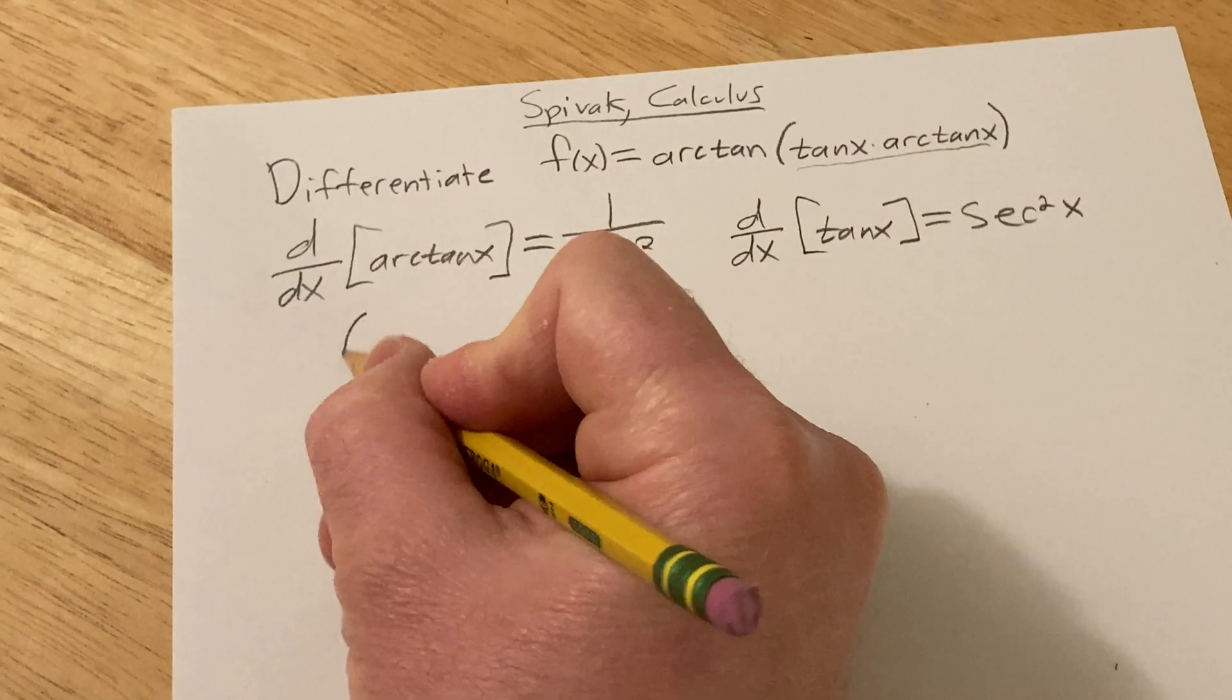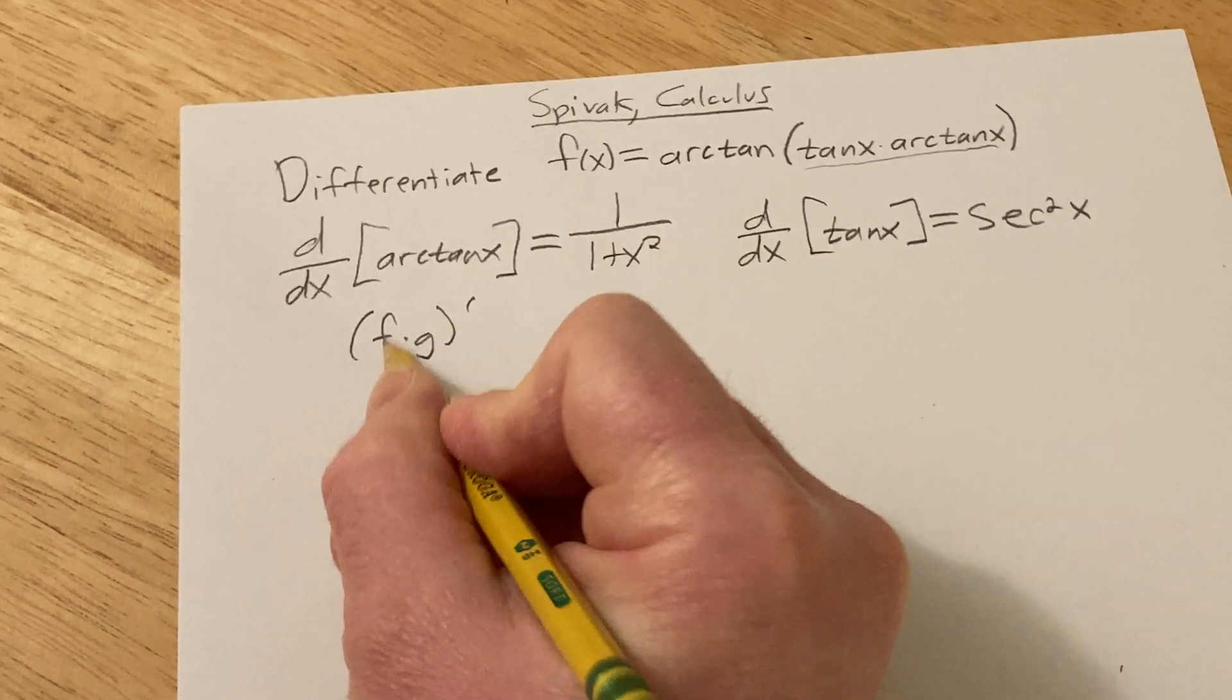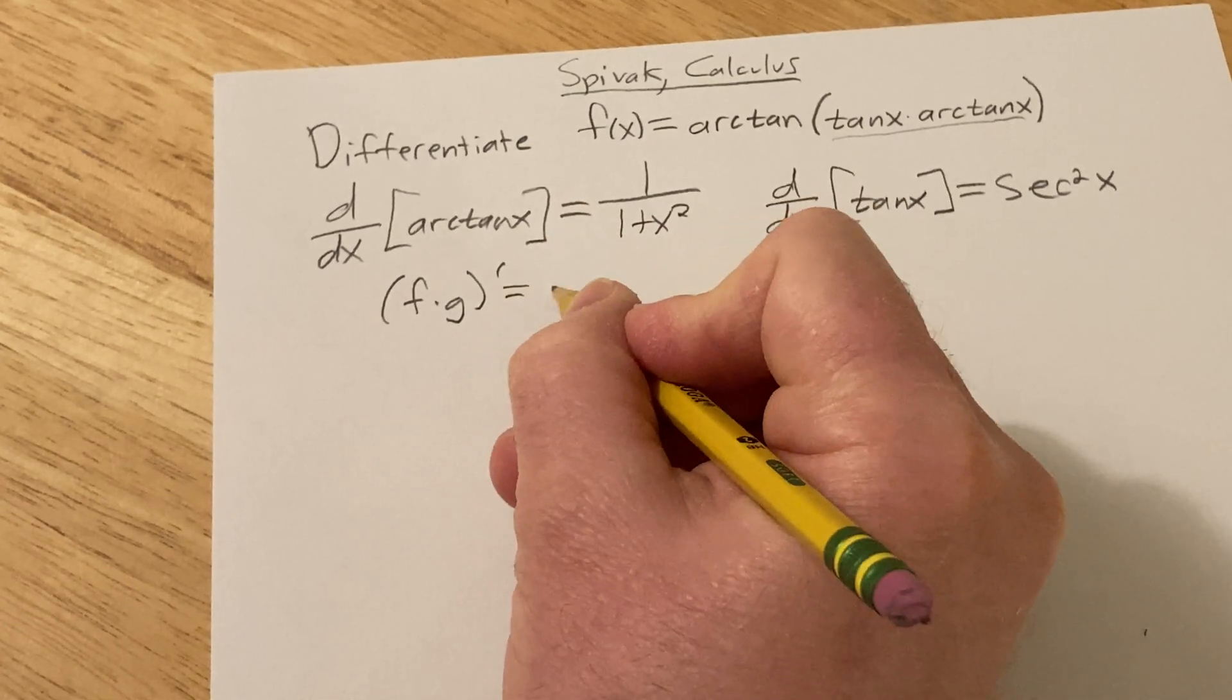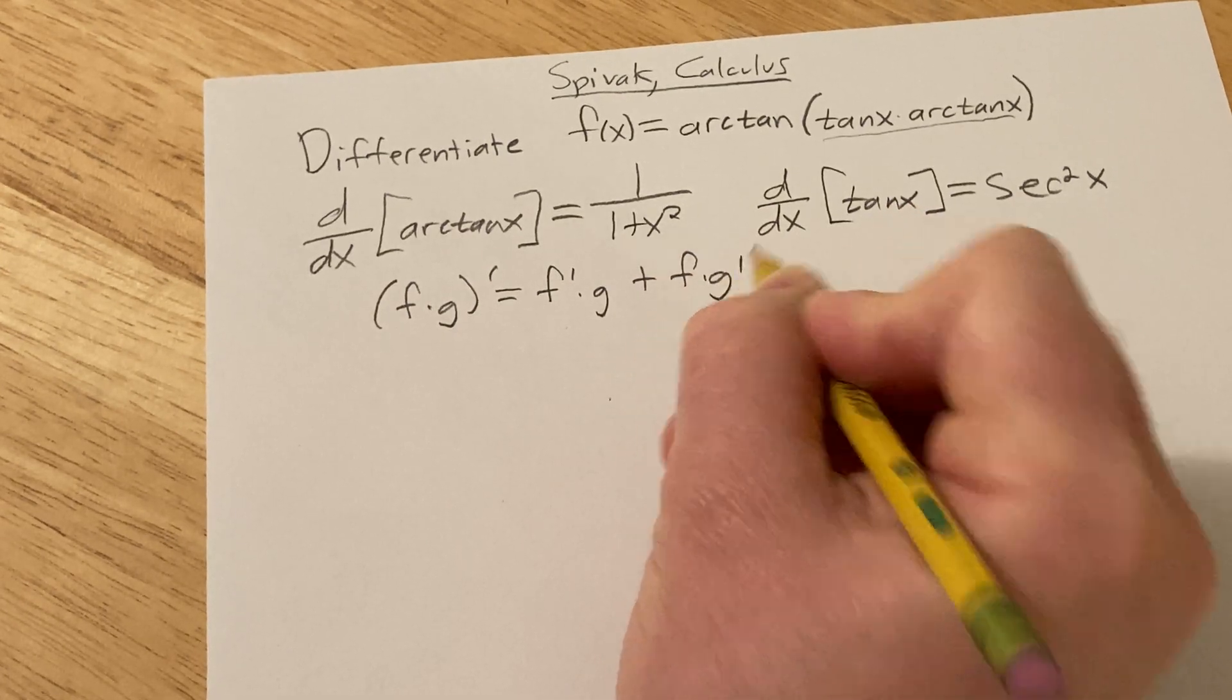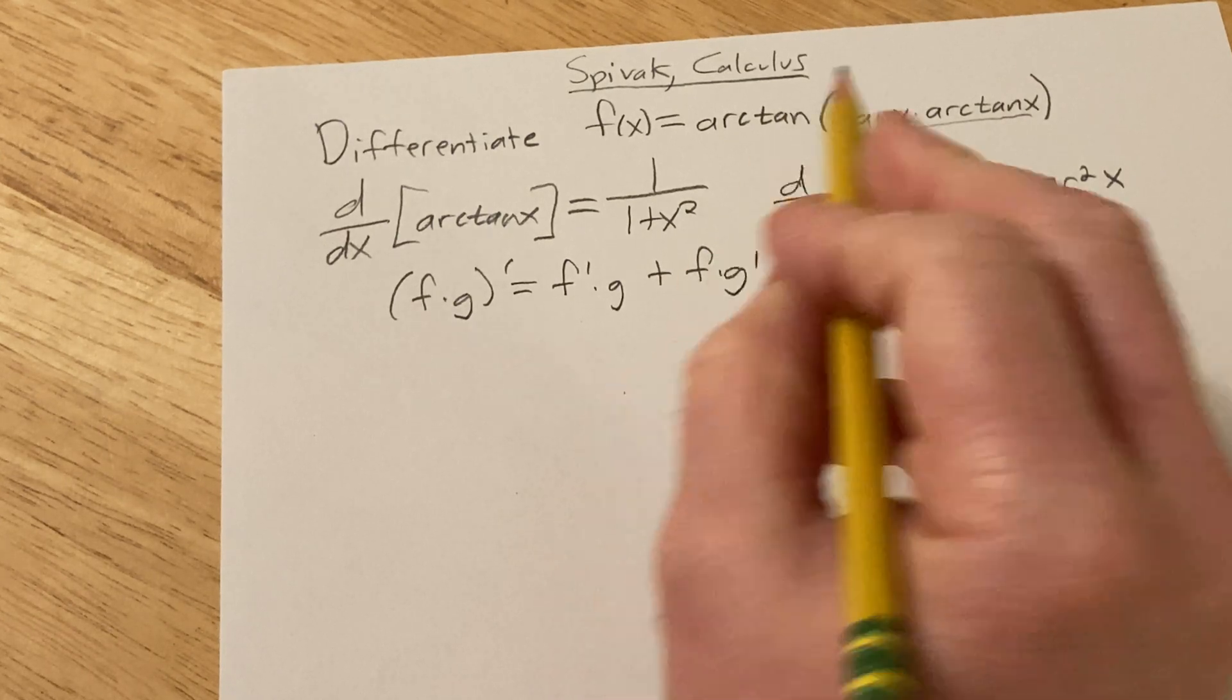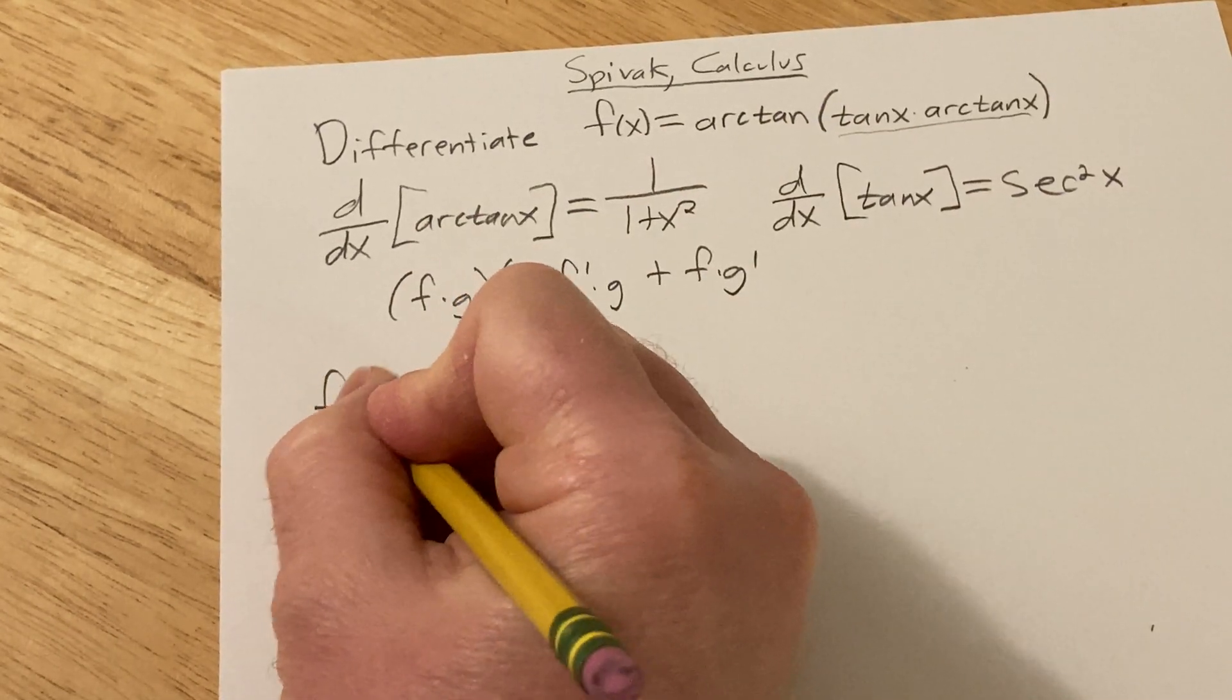I'll refresh your memory on the product rule. It says if you have a function f times g, you think of f as your first function and g as your second function. And it's the derivative of the first times the second plus the first times the derivative of the second. So I think that's almost every formula that we're using. It's quite a lot of formulas. And also the chain rule. Let's just do it. Let's just go ahead and break down and do it.